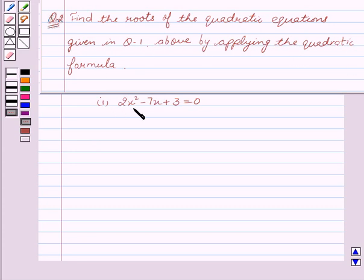Our equation is 2x square minus 7x plus 3 equal to 0. Before starting with the solution, I would like to tell you the basic idea behind the question.